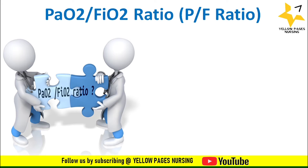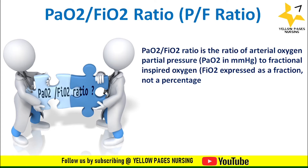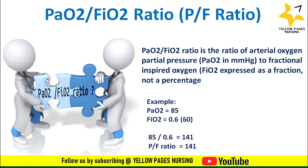Now let's discuss how we calculate the PaO2/FiO2 ratio, otherwise called the Horowitz Index. It is the ratio of arterial oxygen partial pressure to fractional inspired oxygen. FiO2 is expressed as a fraction and not as a percentage. For example, if the partial pressure of oxygen is 85 and FiO2 is 0.6 (i.e., 60% converted to fraction), dividing 85 by 0.6 gives 141, which is the PF ratio. As mentioned, less than 150 mmHg is the indication for prone positioning.